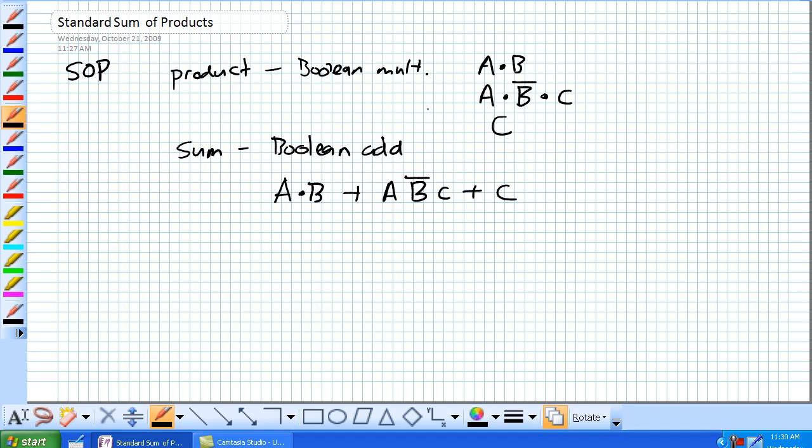The standard form for the sum of products is basically a single negation over bar, cannot extend over more than one variable. So, what that means, this is the single negation bar. It's extending over a number of variables. That's not admissible for a sum of products. What is allowed, though, is the DeMorgan's equivalent of that. So each individual variable may be complemented. You know, this is also acceptable, where not A and not B and C, that's permissible.